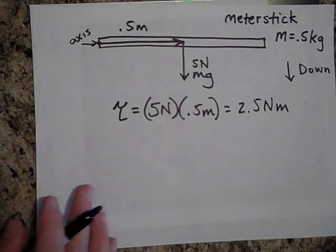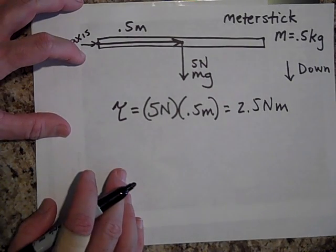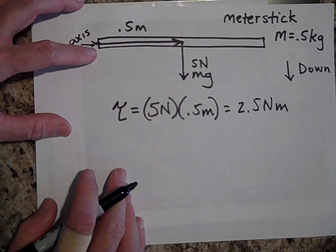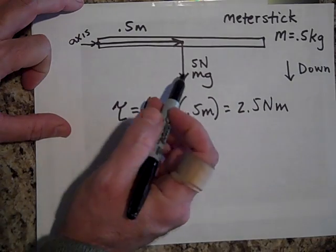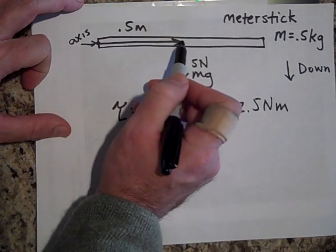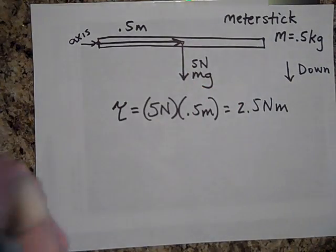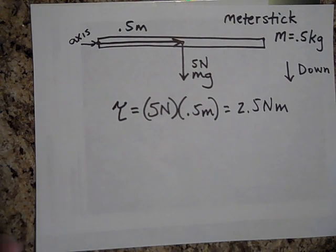So that's the net torque on that meter stick when it first starts to fall. It's two and a half newton meters. And see how I worked with the force of gravity as though it were coming from the center of mass. That's how you do that. Okay. I'll see you in the next video.